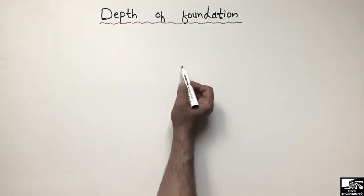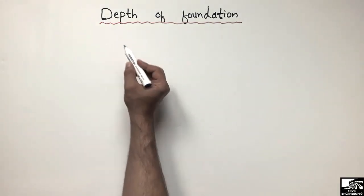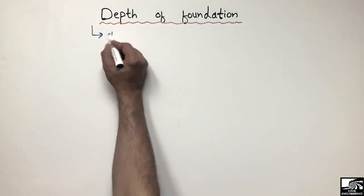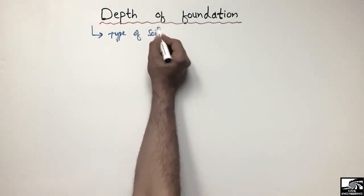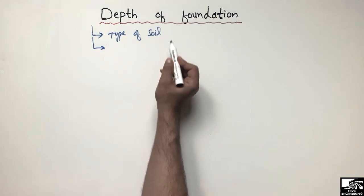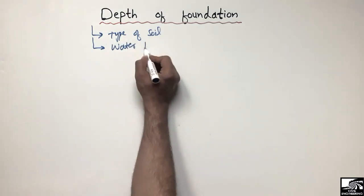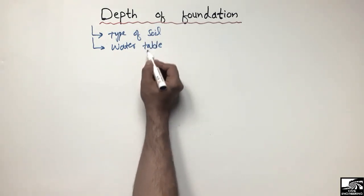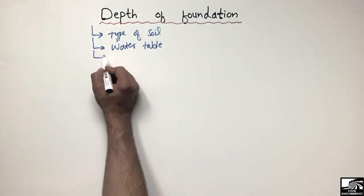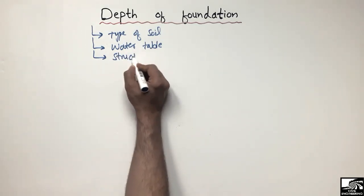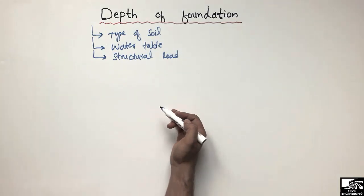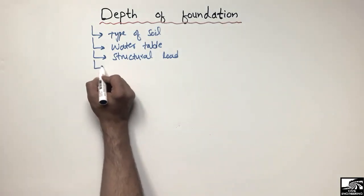First of all, the depth of foundation is affected by many important factors. Some of the factors that affect the depth of foundation are: the type of soil — according to the type of soil you are using, your depth of foundation will vary. The second factor which affects the depth of foundation is the water table — how deep the water table is from the ground level. The third factor affecting the depth of foundation is the structure load, so the higher the load on the ground, the more depth of foundation you have to provide.